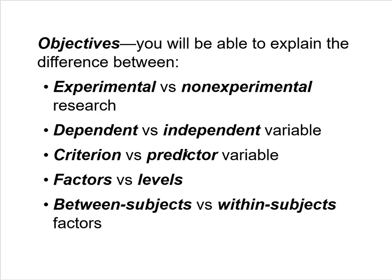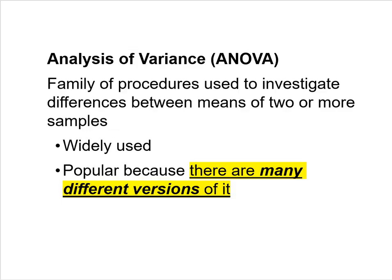Analysis of variance, which we abbreviate as ANOVA, is a family of procedures used to investigate differences between the means of two or more samples. ANOVA is widely used — you will read about it a lot in published research articles, and many of you who are psych majors will analyze your data using ANOVA.